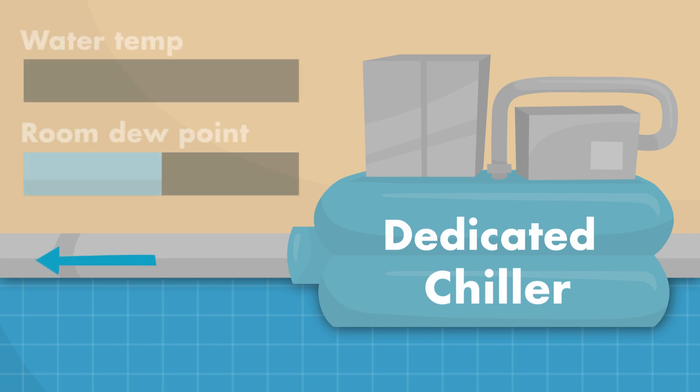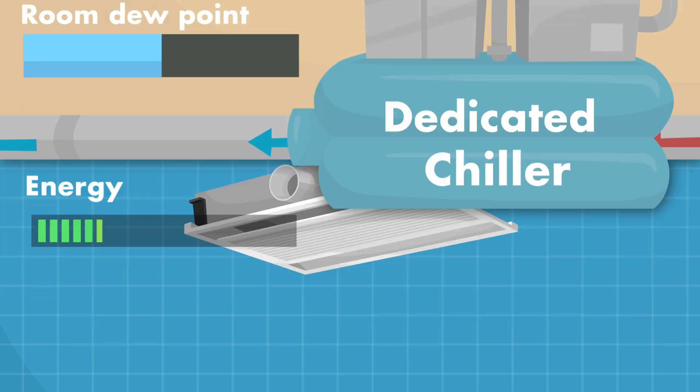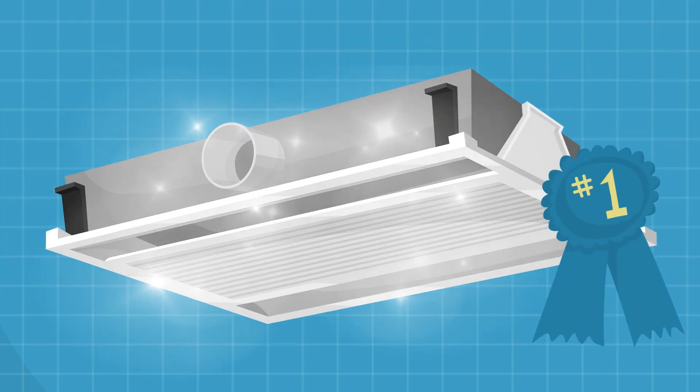Meanwhile, to effectively cool a space, the water circulating through the coil need only be chilled to a temperature just above the room dew point. That means the dedicated chiller uses less energy to deliver the same cooling. When you add up all these savings, it's easy to see why active beams are so efficient.